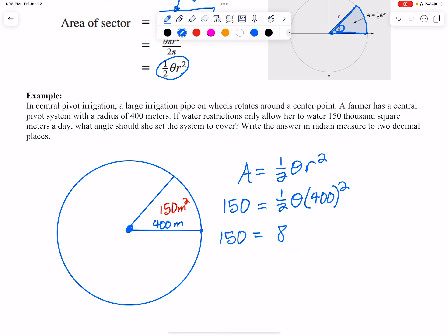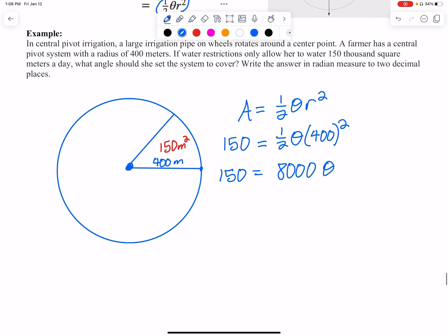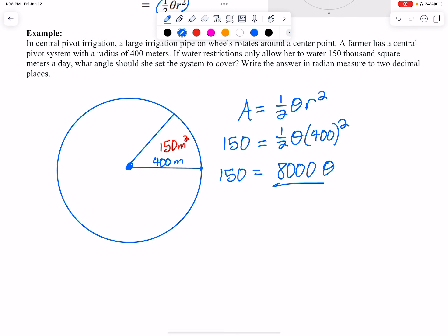And now that's just a linear equation, so I can divide both sides by 8,000, and we get our angle to be 160 over 3, and this is in radians.